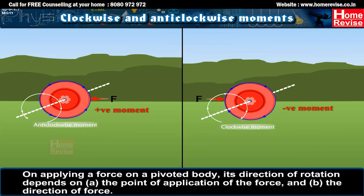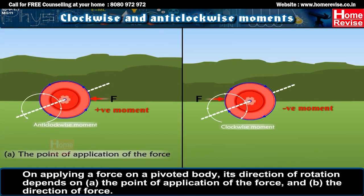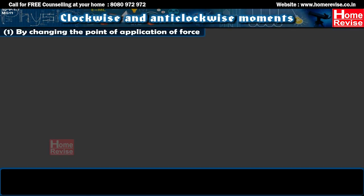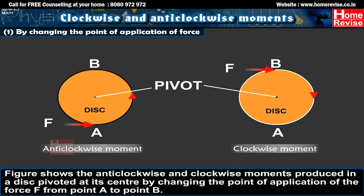On applying a force on a pivoted body, its direction of rotation depends on: A. the point of application of the force, and B. the direction of force. Thus, the direction of rotation of a body can be changed by two ways. First, by changing the point of application of force. The figure shows the anticlockwise and clockwise moments produced in a disk pivoted at its centre by changing the point of application of force F from point A to point B.